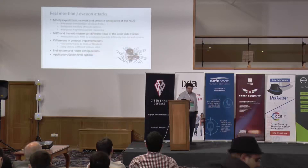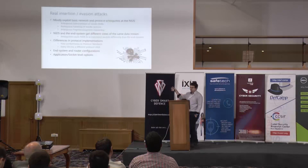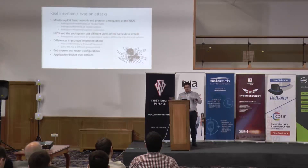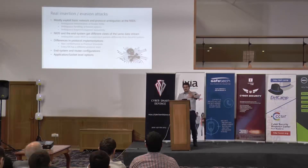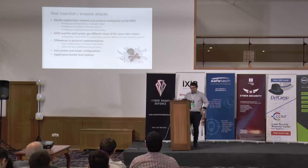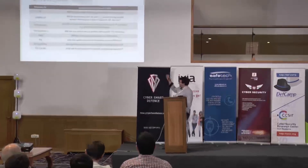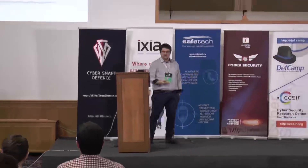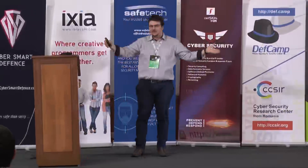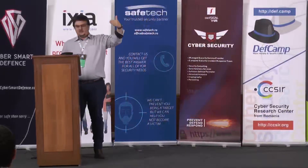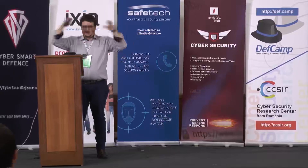If the IDS and the end system differ in the ways they handle these things, you might run into insertion or evasion vulnerabilities. There are differences in protocol implementation. These are some examples of where you could find these ambiguities — either in the TTL field or in the don't-fragment bit. You send a lot of packets that are part of one large packet and play with the DF bit. If that gets ignored on the IDS but processed on the host, it can reconstruct a large packet.